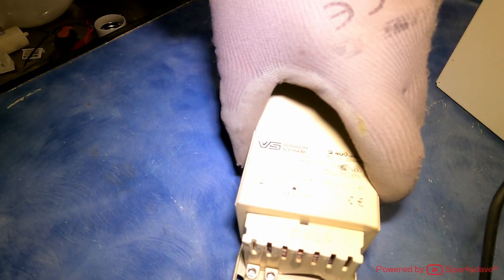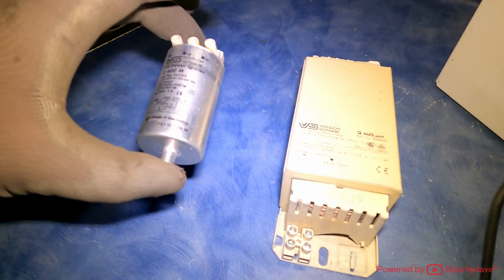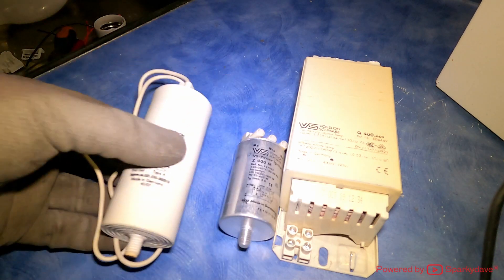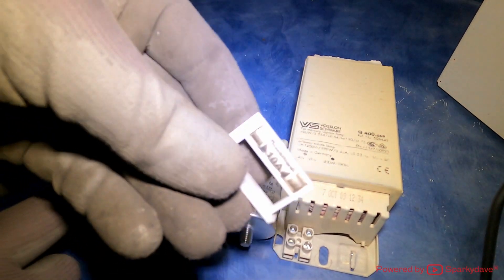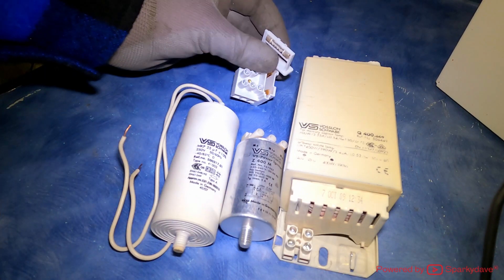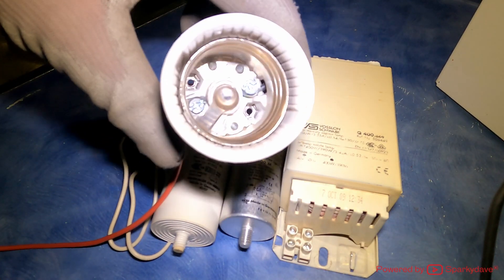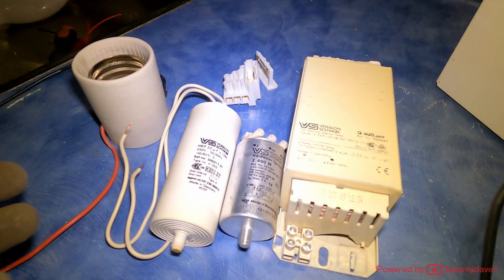There are five main components: the first one is a current limiting ballast, the next one is an igniter, a capacitor, a 10 amp fuse, and an E40 lamp holder. I'm going to quickly wire up the circuit and demonstrate the circuit design to show you guys what the internal circuit looks like.